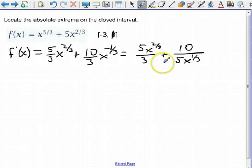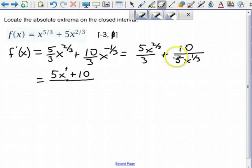Now, let's get a common denominator. So that's going to equal, I'm going to need to multiply the top and bottom of this first expression by x to the 1 third. That'll give me 5x to the 1 because 1 third plus 2 thirds is 1, plus 10. That's already got our common denominator, all over 3x to the 1 third.